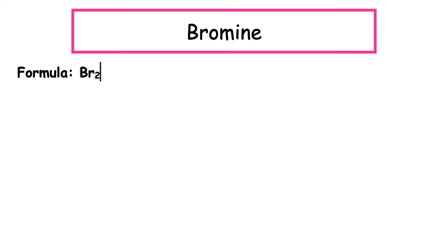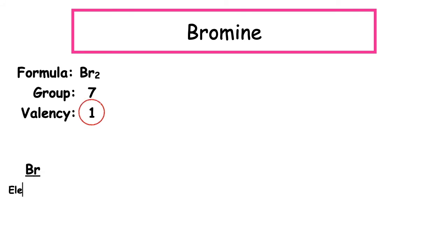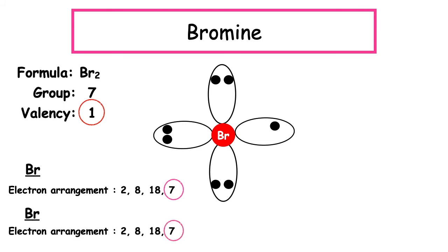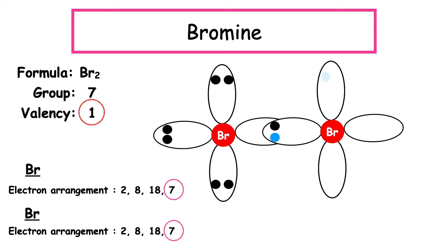Bromine has the chemical formula Br2, found in Group 7 with a valency of 1. The electron arrangement is 2, 8, 18, 7. We circle the outermost occupied energy level — the fourth — and draw a petal diagram, putting in the seven outer electrons sitting singly before doubling up. From the formula we have another bromine atom with the same electron arrangement, so we draw another petal, overlapping the unpaired electron. We get a shared pair of electrons representing our covalent bond. Bromine has one pair of shared electrons, so it has a single covalent bond.